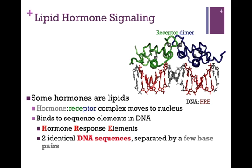At the top of the screen on the right, we have a representation of the hormone receptor complex. The receptor is the green and blue trace, and our hormones are the gray spheres. This complex moves to the nucleus and binds to certain target sequences within the DNA. Those sequences are referred to as the hormone response elements, because they're elements within the structure of the DNA that respond to the hormone receptor complex.